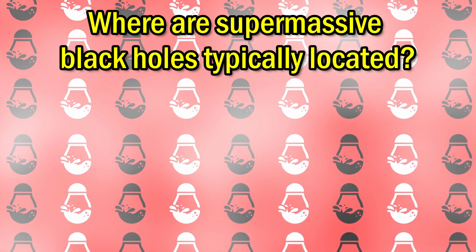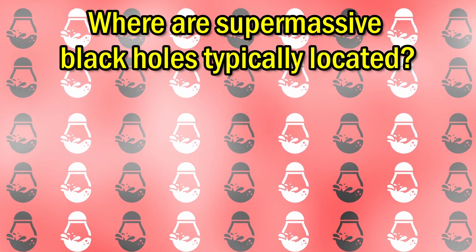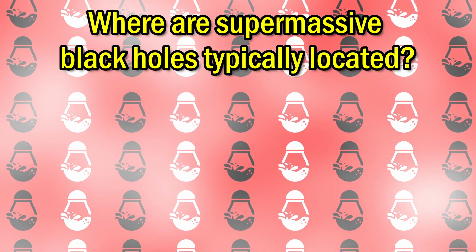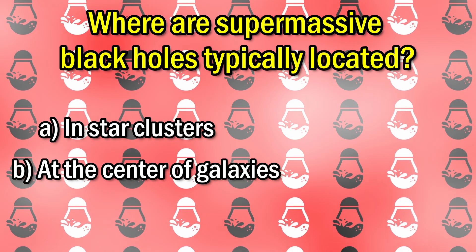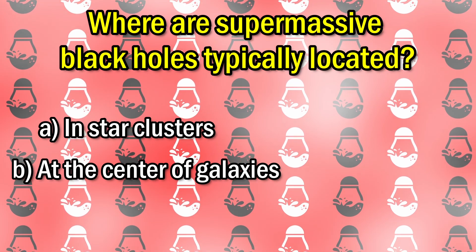Next round. Where are supermassive black holes typically located? A: in star clusters. B: at the center of galaxies. C: at the edge of the universe.